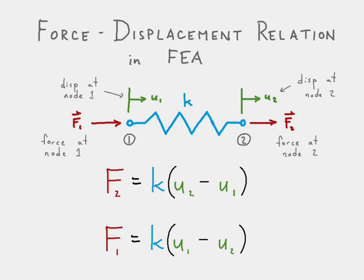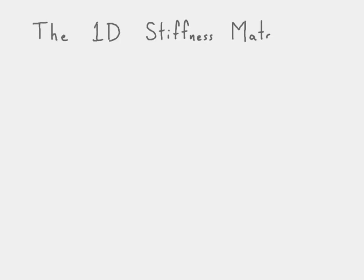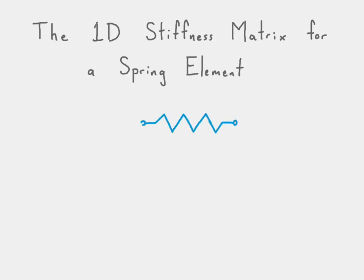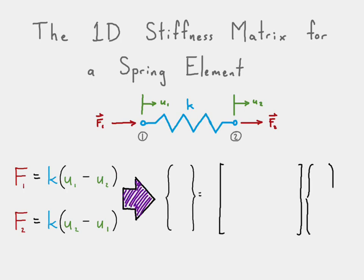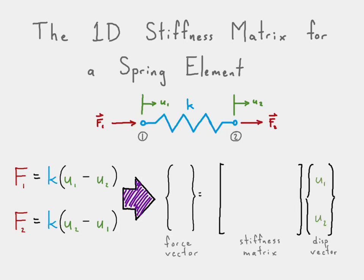If we agree with those two equations, the next step is to put them into matrix form. There's our spring element again with node one and node two, our forces and our displacements. We're going to write the equations from the previous slide and put them into matrix form where each row corresponds to one of those equations.